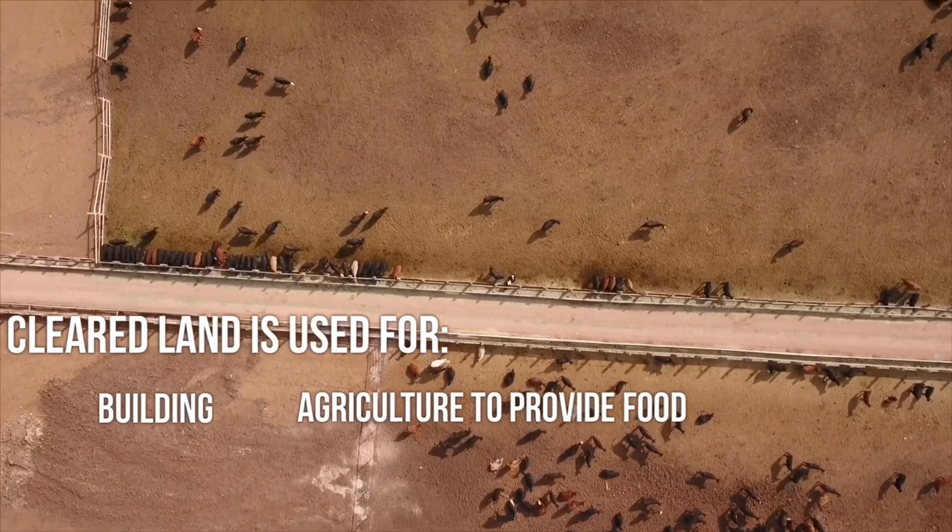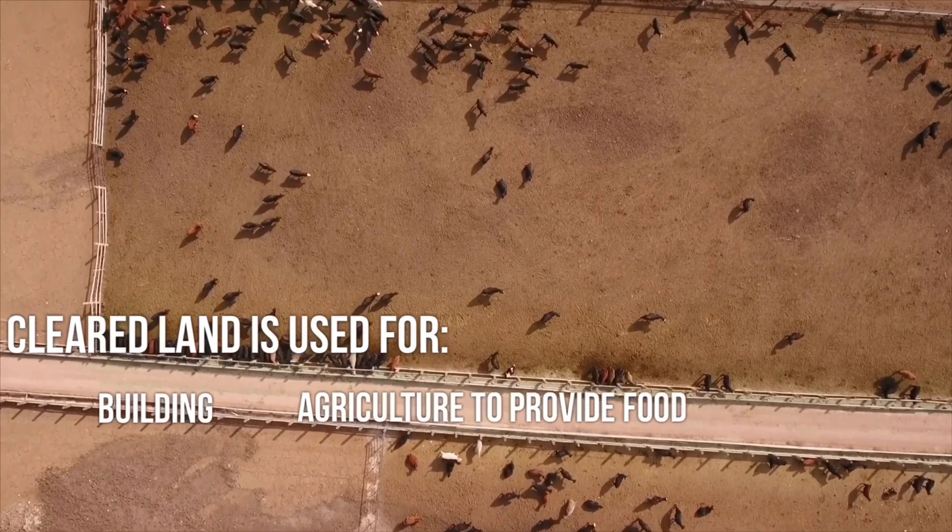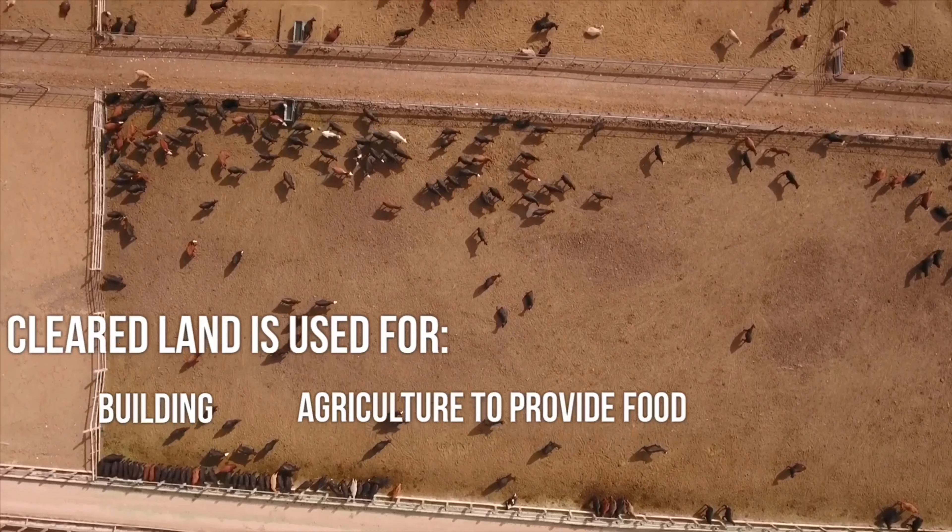Often the land can be cleared for cattle. And that has another side effect in that cattle produce methane, which is another greenhouse gas. And this is also a gas that we're seeing increase year on year.